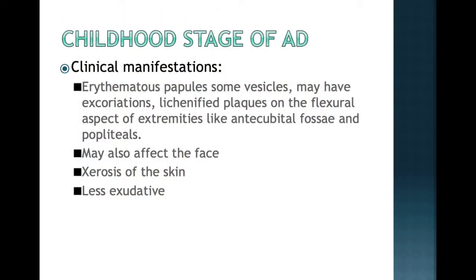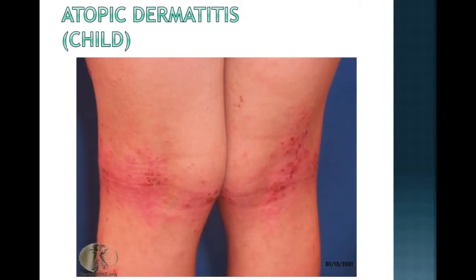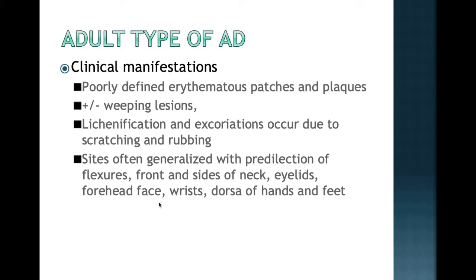In the childhood stage of atopic dermatitis, the lesions are located at the flexural aspects of the extremities; the face may also be affected. Lesions are drier compared to the infantile stage. The antecubital area and popliteal area are the classic sites. For adult type, lesions are usually poorly defined with a lot of lichenification and excoriation due to constant scratching and rubbing. The sites of predilection for adult type are similar to the childhood type.